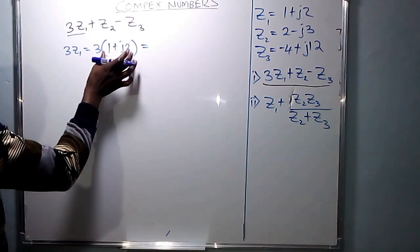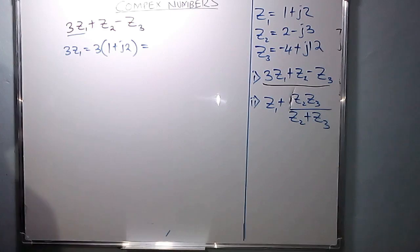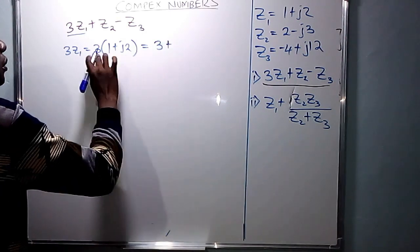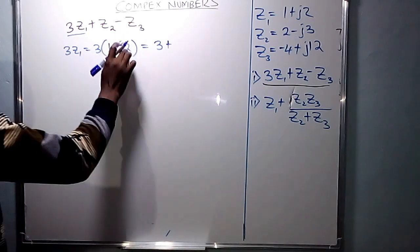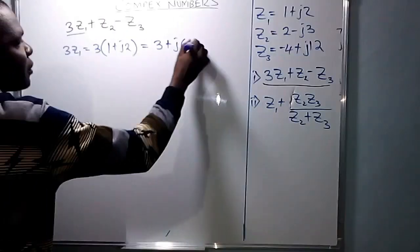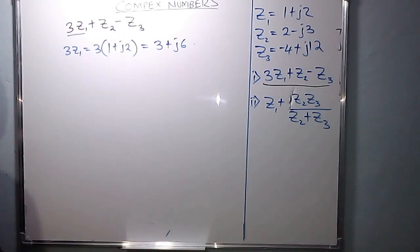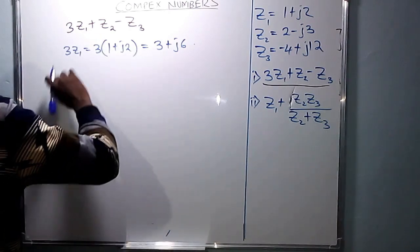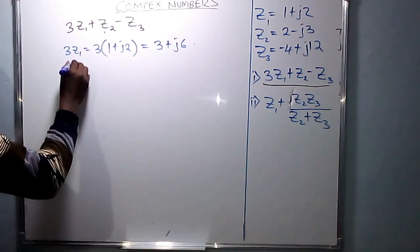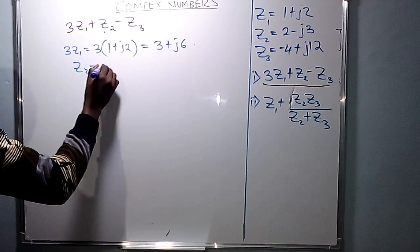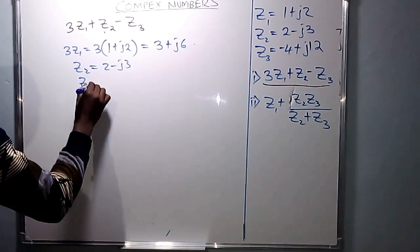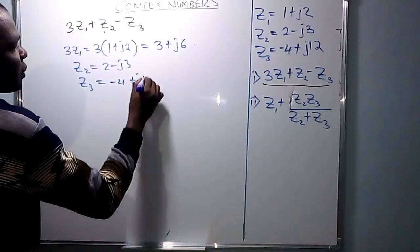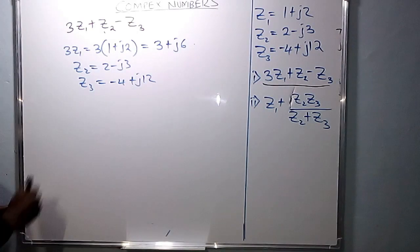The factor outside multiplies all the factors inside. So 3 times 1 gives 3, and 3 times j2 gives j6, because 3 times 2 is 6. So we have 3 plus j6. The second term is just Z2, and the third term is just Z3. So the whole expression is 3Z1 plus Z2 minus Z3.